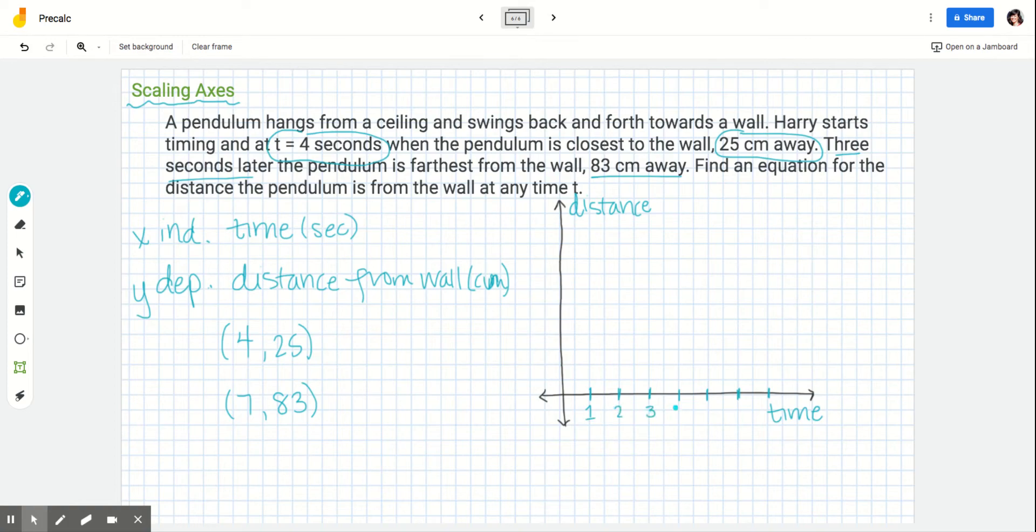So if I did 1, 2, 3, 4, 5, 6, 7, then it would fit perfectly. If I needed to go a little further, maybe each box counts for 1, not 2, or each box is 1 second, not half a second.